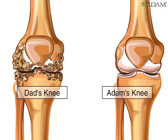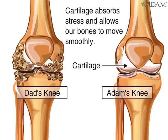The condition results from injury to the cartilage. The cartilage of the younger person's knee is smooth and white, normally absorbing stress and covering the bones so they can move smoothly. The older person's knee has deteriorated cartilage and lumps on the bone.